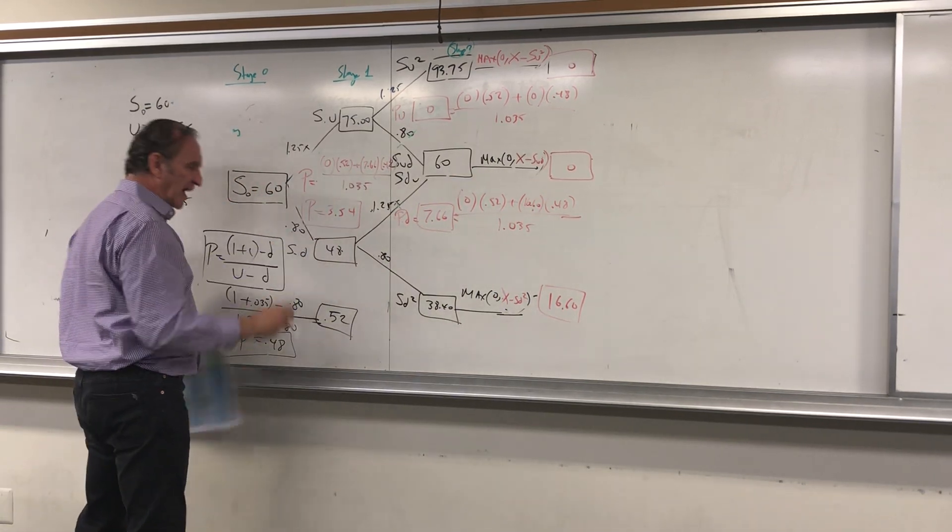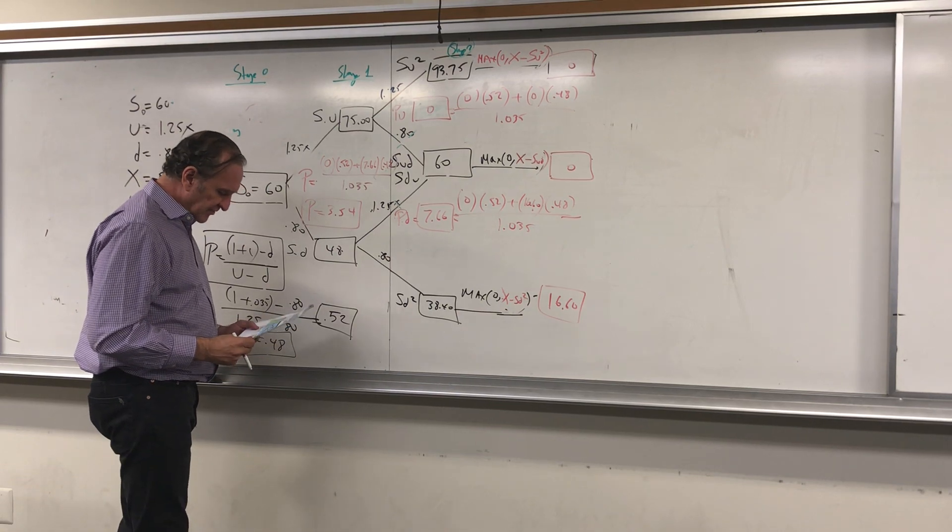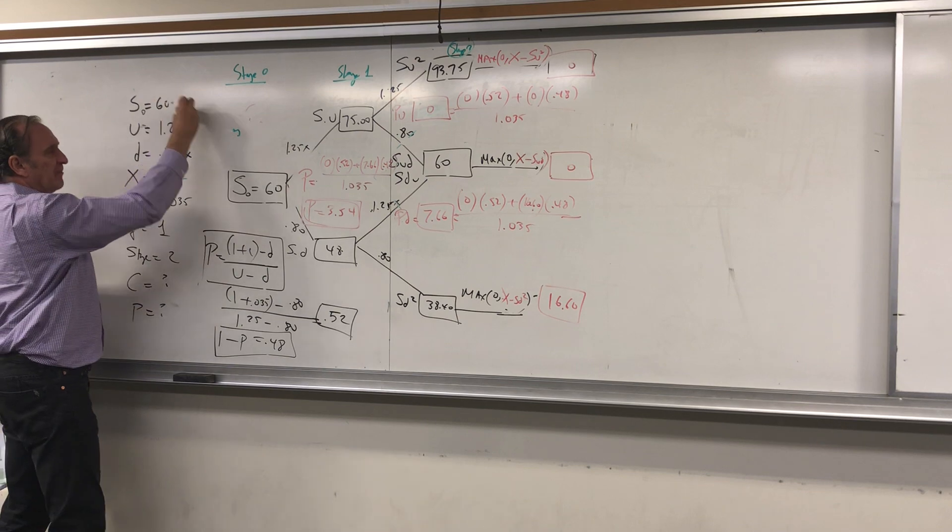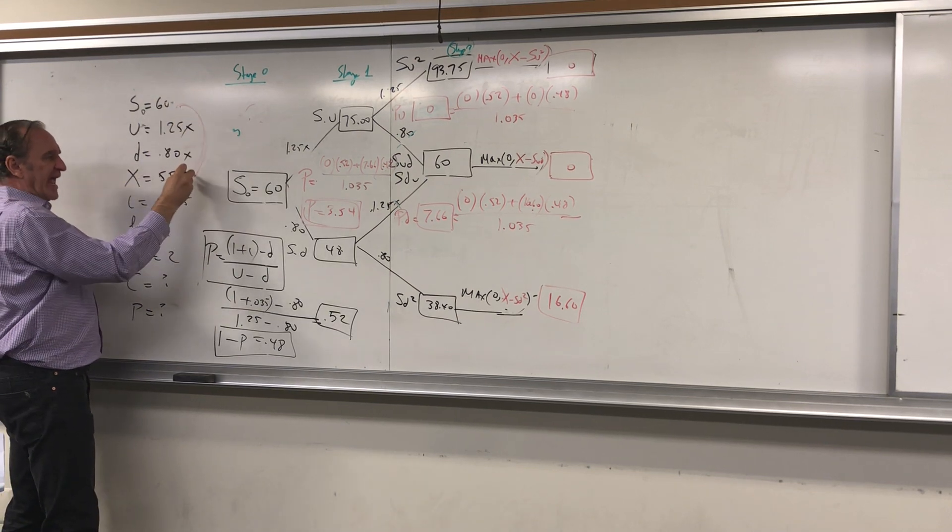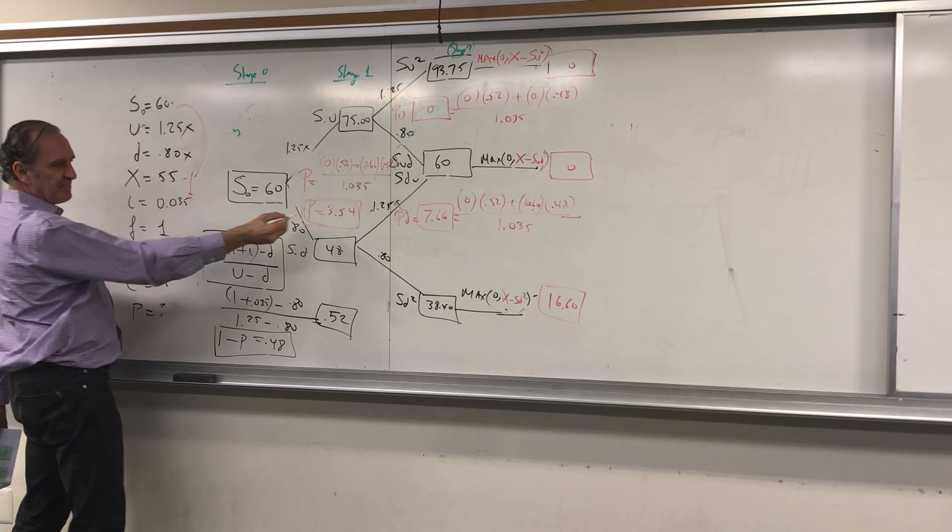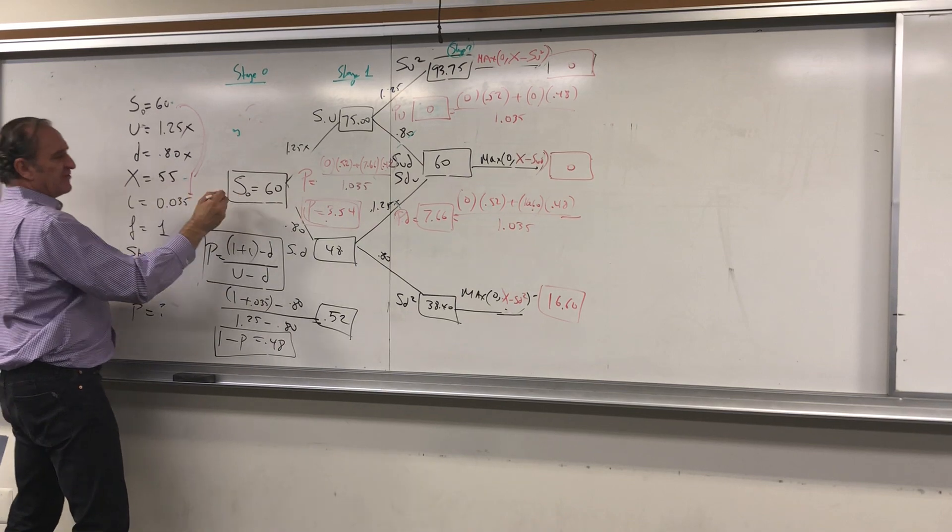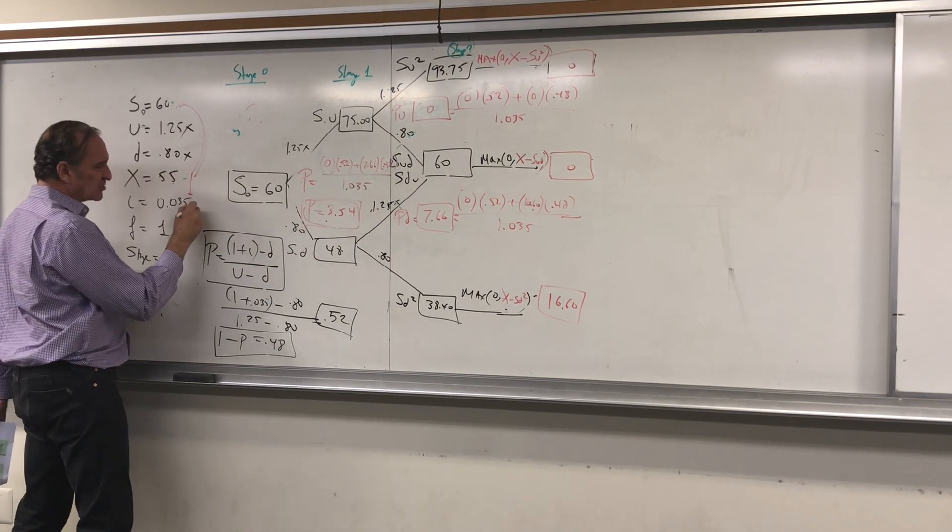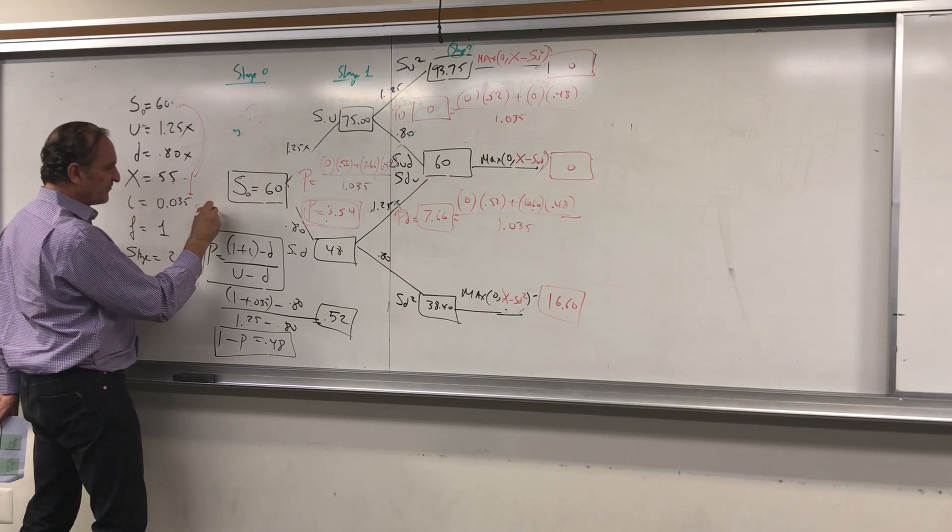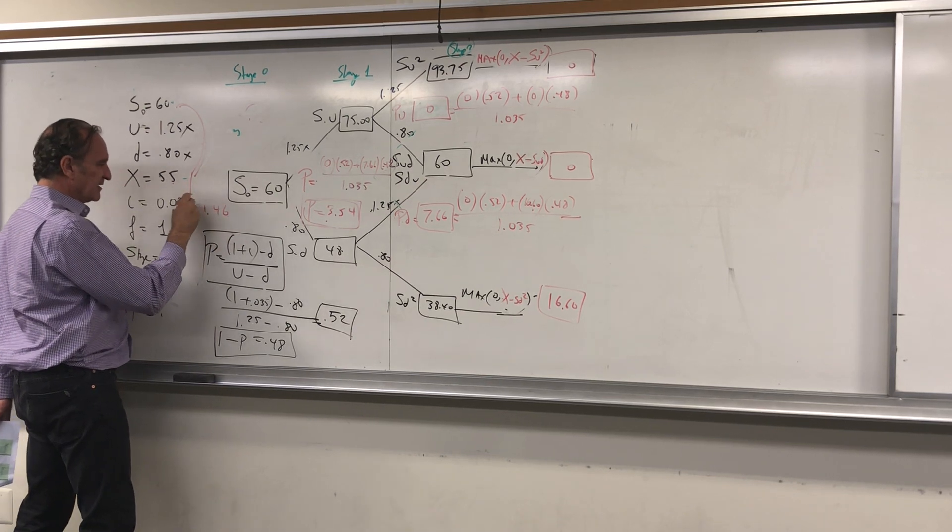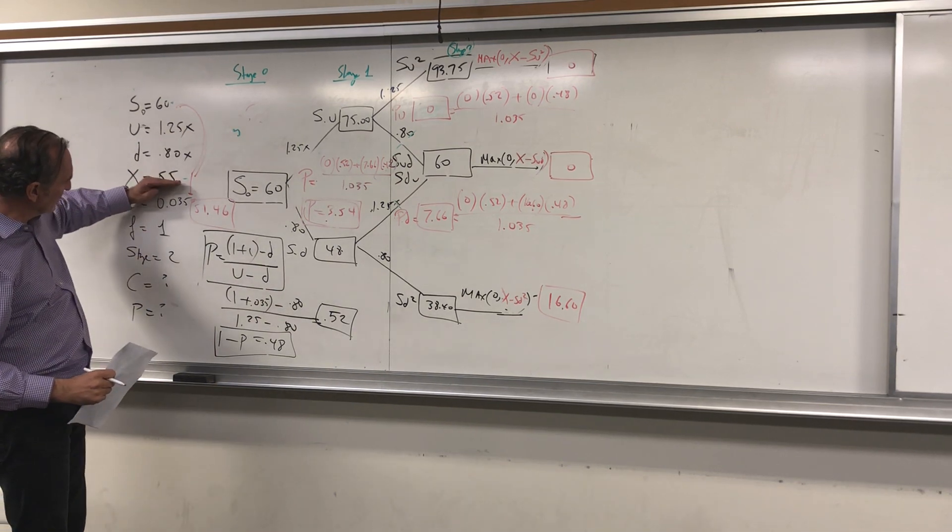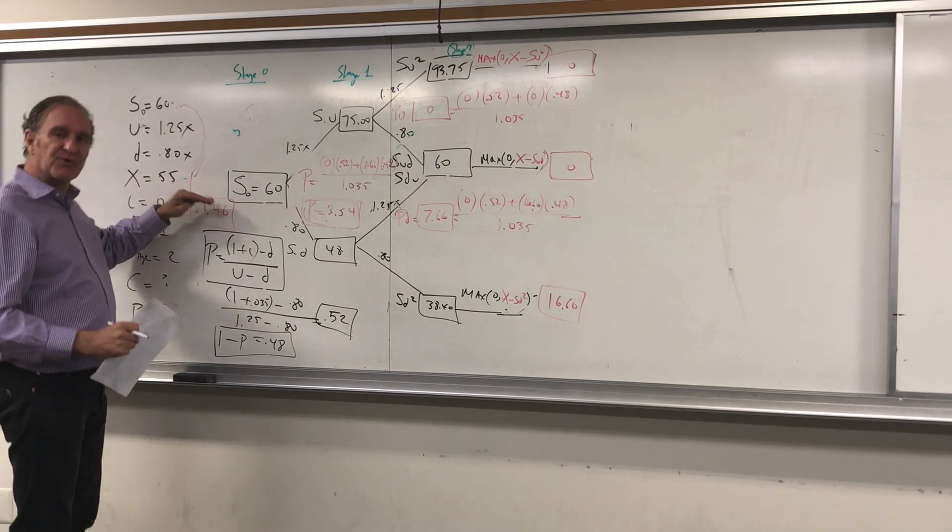The stock has to go down so that break-even will be 55 minus 3.54. So the stock has to be at 51.46 before you make money. You're already in the money below 55, but you're in the profit zone below 51.46.